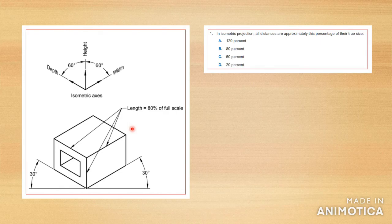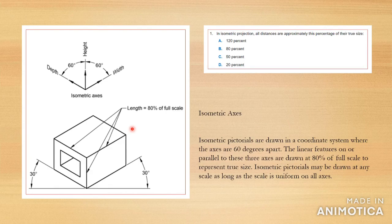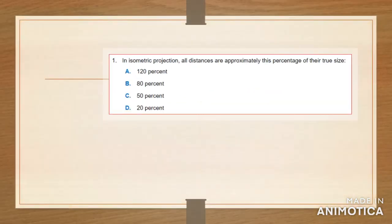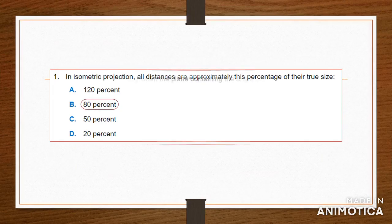The lines are usually 80% of the original true measurement. So if you're drawing an isometric drawing using 30 degrees, the drawings projected backwards will be 80% of the full scale. In isometric pictorials, the axes are usually 60 degrees apart, so if you have three axes X, Y, and Z, the angle in between each axis would be 60 degrees. The answer is 80%.